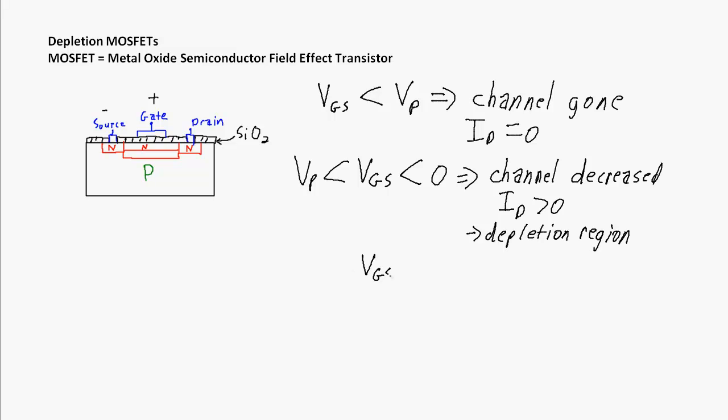The third range is if VGS is greater than zero. If VGS is greater than zero, then the channel size will be increased beyond the default state when VGS equals zero. We'll have an ID greater than zero again, and this region, because I'm making my channel bigger than the default, is called the enhancement region. These are the three states to recognize for the ranges of VGS.